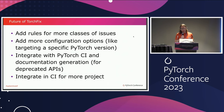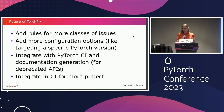We also want to add more configuration options. For example, right now TorchFix assumes you want to use the latest version of PyTorch, which is not necessarily the case. Another direction is to integrate TorchFix with PyTorch CI and documentation generation — so when you deprecate a function in PyTorch, we can check that a TorchFix rule exists to flag and update the deprecated function to the new variant. And of course, we want to see TorchFix used in the CIs of more projects.